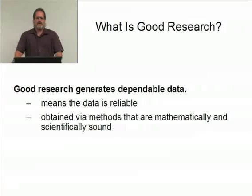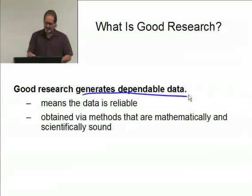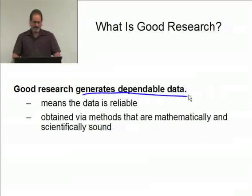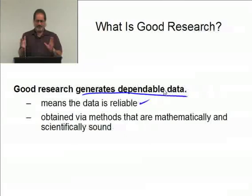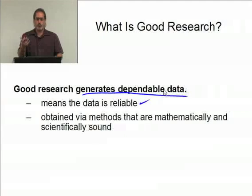Let's start with a discussion about what constitutes good research. Good research, first and foremost, generates dependable data. Dependable data means the data is reliable — it's been obtained via methods that are mathematically and scientifically sound. If the data is reliable and obtained in appropriate ways, you're going to help reduce bias, as an example.